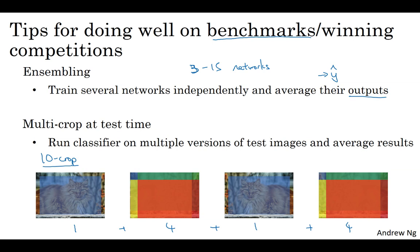And so what you do is you run these 10 images through your classifier, and then average the results. So if you have the computational budget, you could do this. Maybe you don't need as many as 10 crops, you can use a few crops, and this might get you a little bit better performance in a production system,